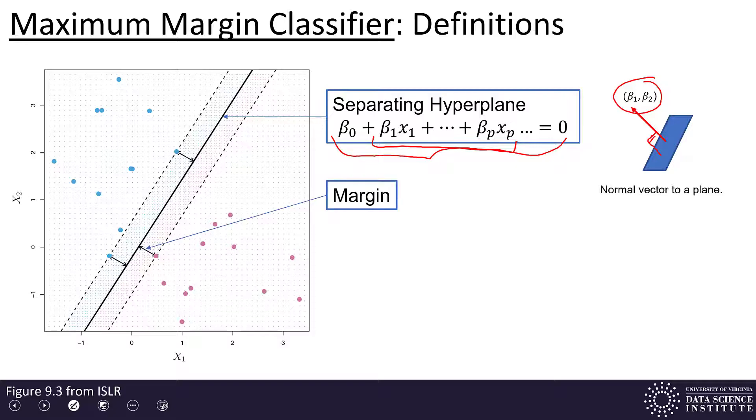So, next thing we need to define is the margin. We've talked about this. This is the distance from the separating hyperplane to the points in each of the classes that are closest to that separating hyperplane. The points that are on these dashed lines that are a distance away from the separating hyperplane equal to the margin, these points are called the support vectors. They are the points that give support to our separating hyperplane.